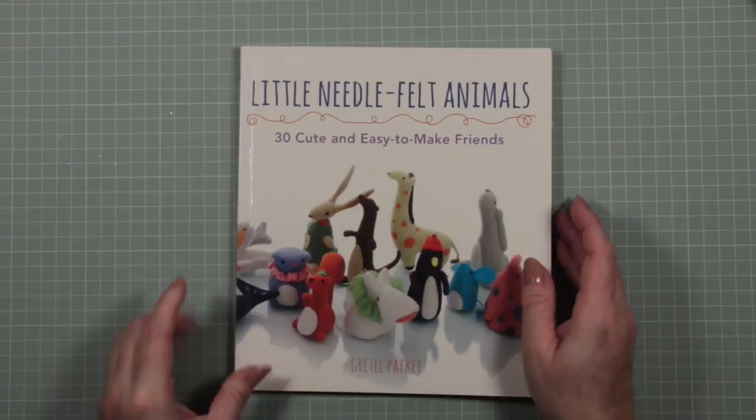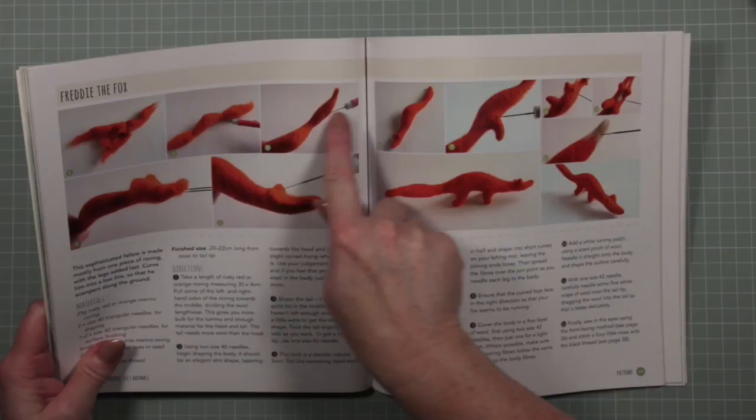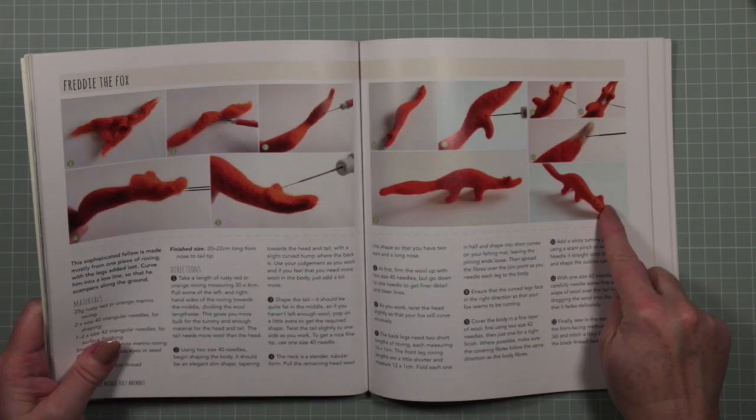So this is her book, 'Little Needle Felt Animals,' and this particular pattern for the fox is here. And it shows you, it takes you through each stage to show you exactly how to make it. So you've got visual references and then there is a description below to take you from the pool of wool to a final animal.